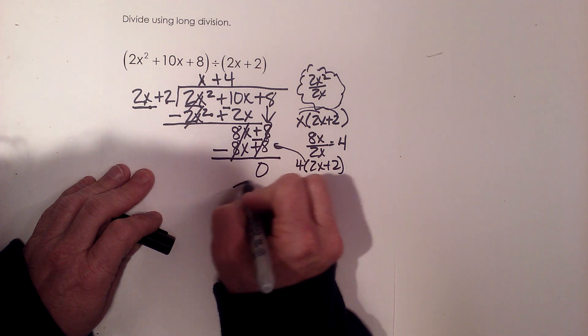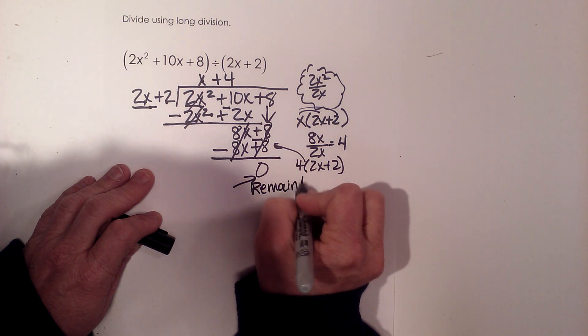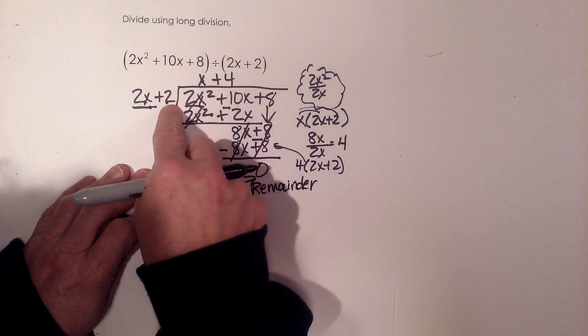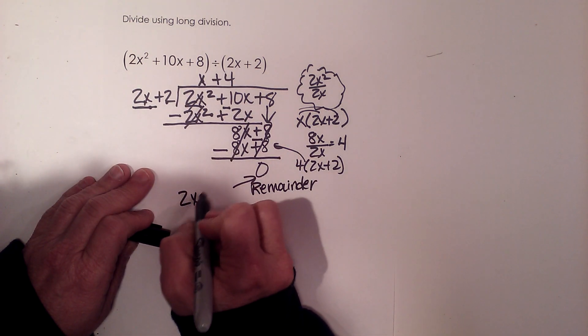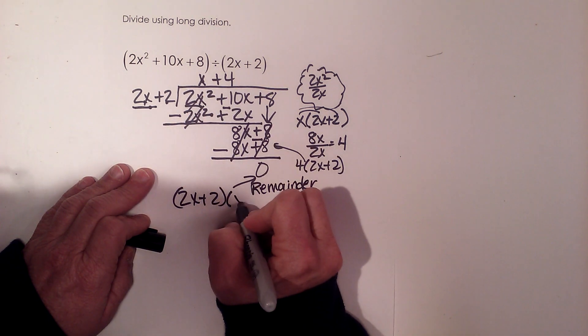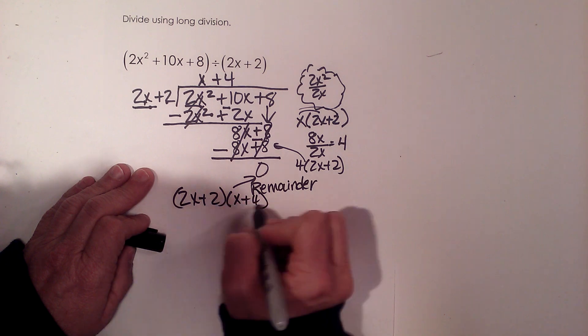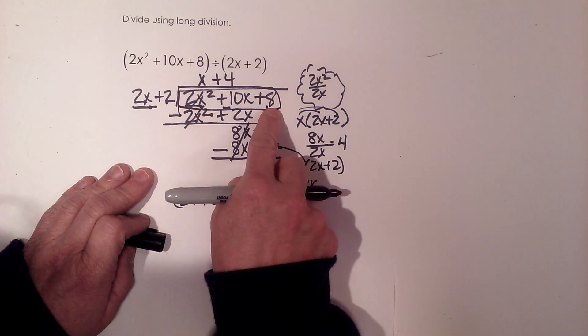So that means my remainder is 0. So if I take these two and do the product of 2x plus 2, that binomial, times x plus 4, if I FOIL all this out, I will get 2x squared plus 10x plus 8. So that's how you use long division to find your solution.